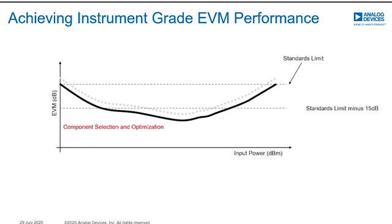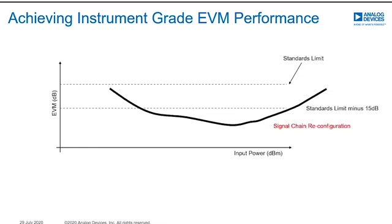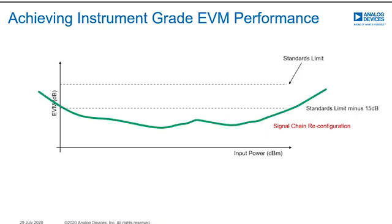However, this may not be enough. By reconfiguring the system, we can trade off the noise performance for the linearity performance, shifting the curve to the right. We can also do the opposite, where we reconfigure the system for better noise performance, which would shift the curve to the left. As a result of reconfiguration, we can create a new bathtub curve that is an order of magnitude better than the original design.